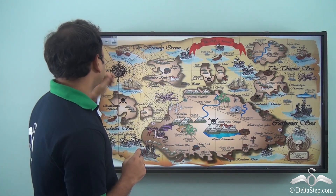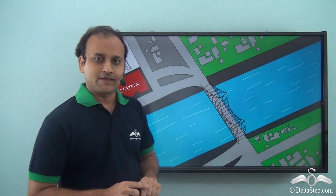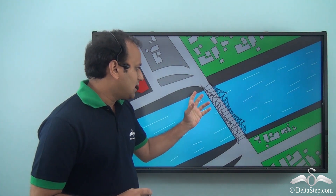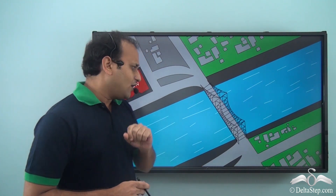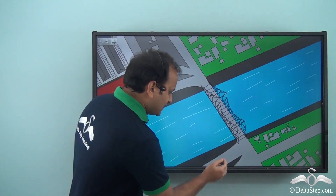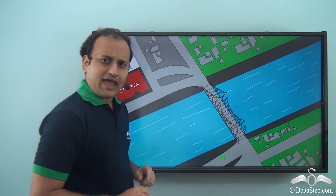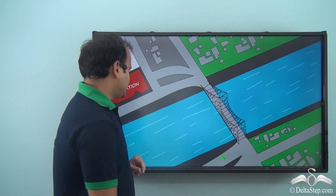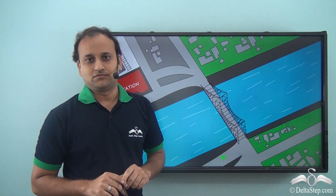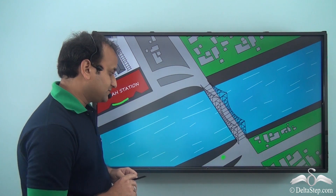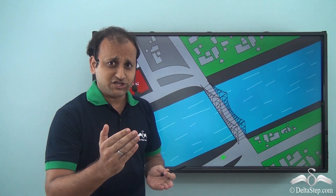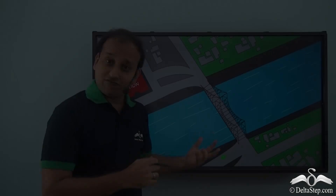So let's quickly understand what maps are so we can help Jack locate his treasure. Now this is the Howrah Bridge of Kolkata — a very legendary landmark that we all know about. Now if you were standing somewhere here and you wanted to reach Howrah station, how would you do that? Well, for that you need a route map or something that shows you the location and how to reach Howrah station.